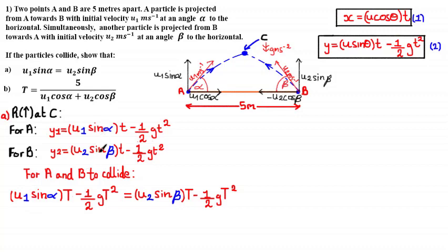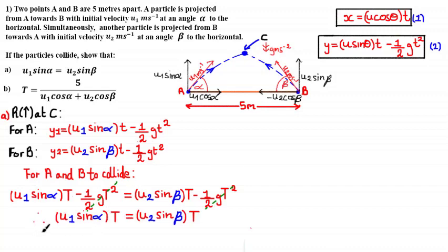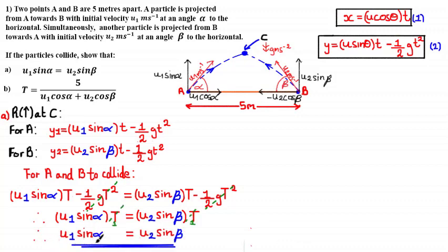Setting the two vertical equations equal: u₁ sin α · T − ½gT² = u₂ sin β · T − ½gT², where T is the time at which the particles collide. Adding ½gT² to both sides gives u₁ sin α · T = u₂ sin β · T. Dividing both sides by T, we get u₁ sin α = u₂ sin β, as required.